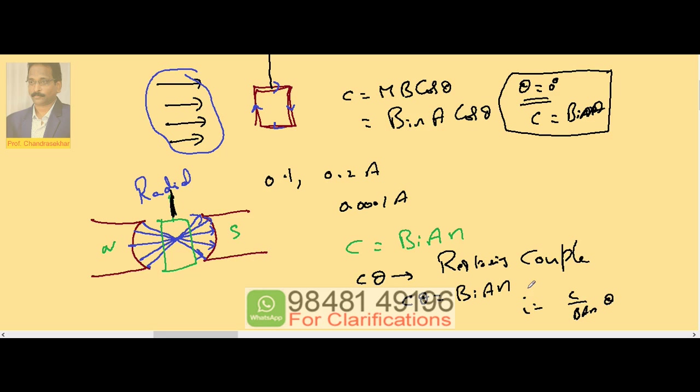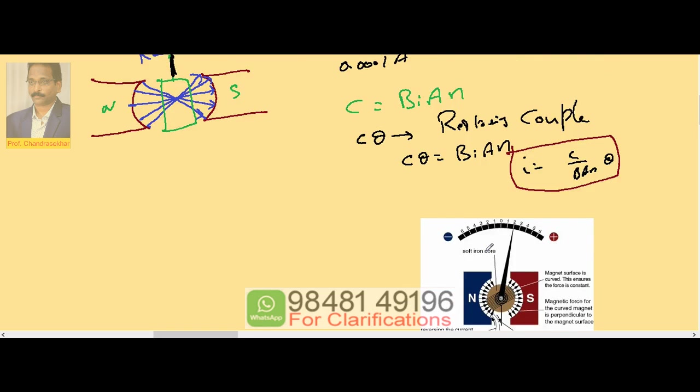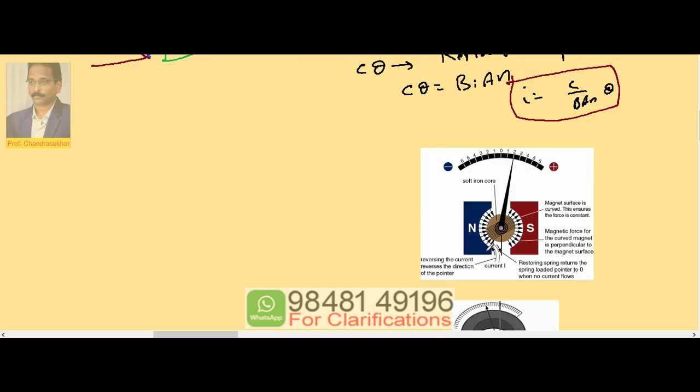Setting the applied couple equal to the restoring couple gives: BINA = Cθ, so I = (C / BAN) × θ. Using this equation, you can measure the current passing through the circuit.